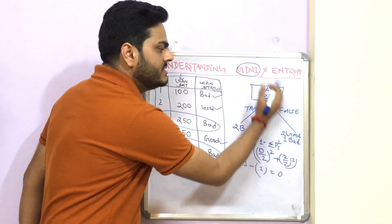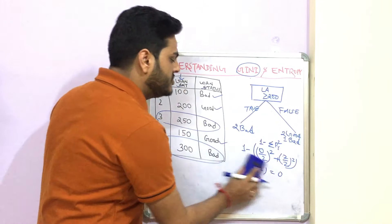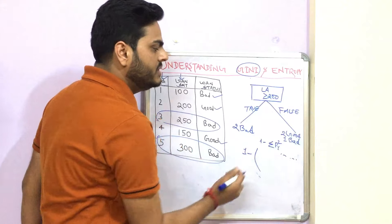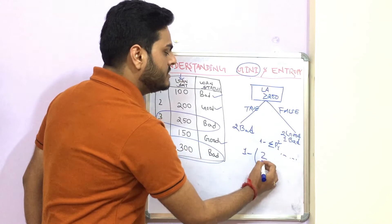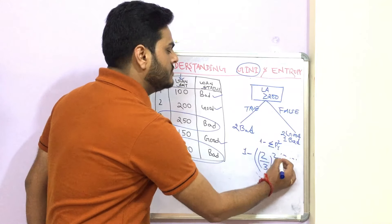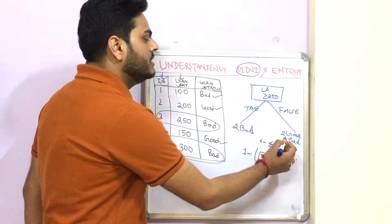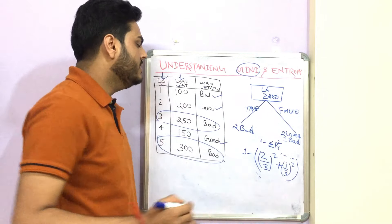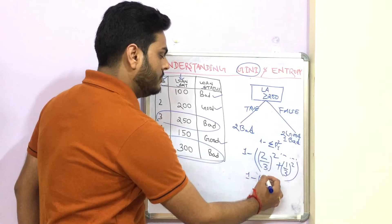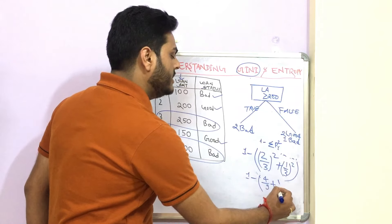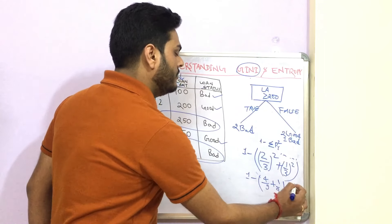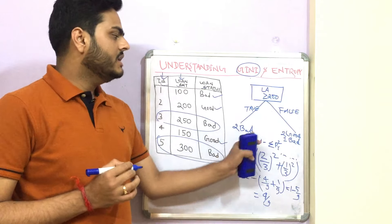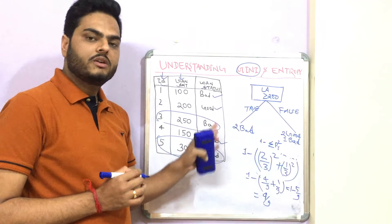For the right side of the tree, the Gini calculation is: 1 minus [(2/3)² + (1/3)²] = 1 minus [4/9 + 1/9] = 1 minus 5/9 = 4/9. So 4/9 is the Gini index for this side, and 0 is the Gini index for the other side.